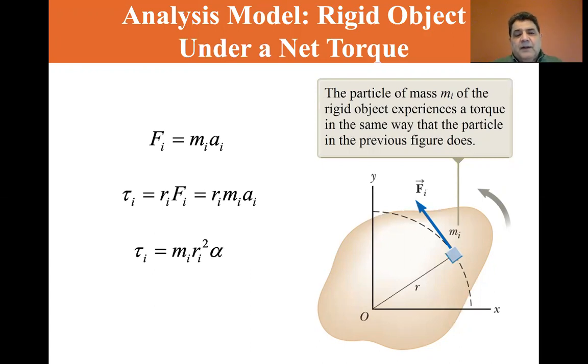So torque for I is equal to RI times FI equals R times MIAI. So torque for the I-th case is equal to the mass of the I-th case times RI squared times alpha. Now alpha is going to be the same for all the objects. There is no I-th rotational acceleration. They're all going to be the same.